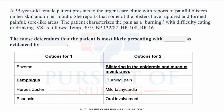Eczema is characterized by tiny red vesicles. Herpes zoster presents with skin vesicles caused by a virus. Psoriasis presents with red raised papules and large plaques covered by silvery scales. In this particular patient, she has blistering in the epidermis and mucous membranes, which is very characteristic of pemphigus.